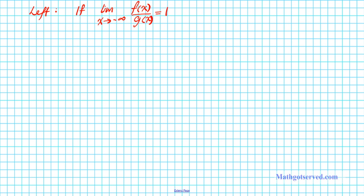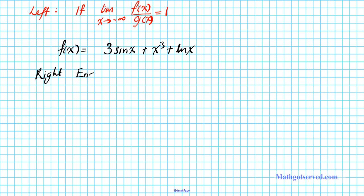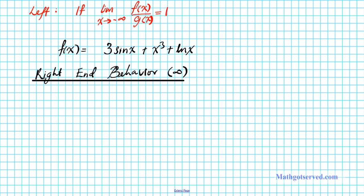Now with this information we're going to go ahead and solve the problem. We're going to start by looking for the right end behavior. Let's rewrite the function: f of x equals 3 sine x plus x to the third plus the natural logarithm of x. For right end behavior we're looking at x tending towards infinity, because that's what's at the right end of your x-axis. So we're going to take the limit as x approaches infinity of each addend function — there are three of them.